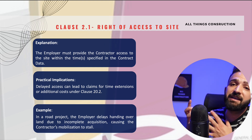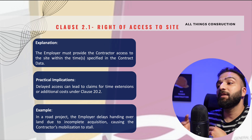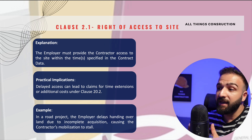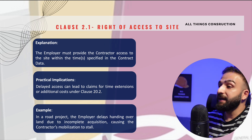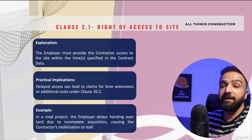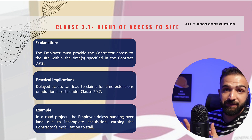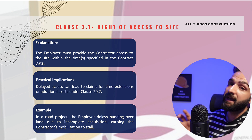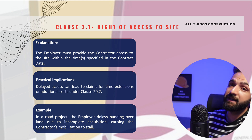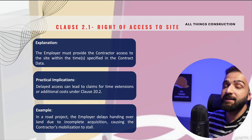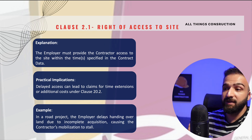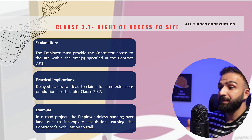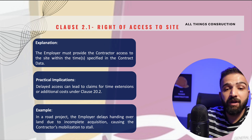The key takeaways from Clause 2.1 are that the employer must provide timely access to site, otherwise they risk being liable for delay-related claims. If there are any delays in access to site, the contractor must document these delays properly in order to substantiate any claims they might have.